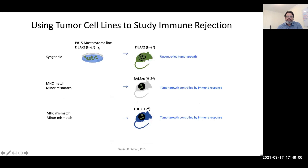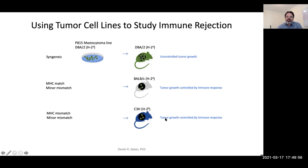You can do the same sort of experiments with tumor cell lines — in this case a P815 mastocytoma line, which is a DBA/2 H2D derived cell line. If you put it in a DBA/2 mouse, there is no mismatch, and you'll get uncontrolled tumor growth. By contrast, if you place P815 cells subcutaneously in a BALB/c mouse, tumor growth will be controlled because you have a minor mismatch. You can also have a major and minor mismatch: if you place P815 cells into a C3H mouse, that tumor growth will be controlled by an immune response. So transplantation laws also apply in the context of tumor cells.